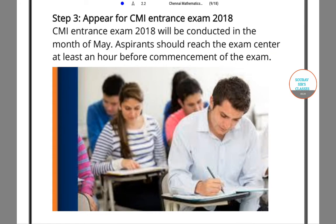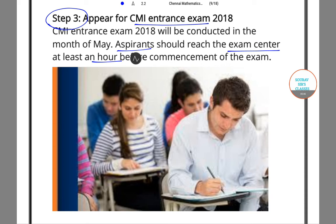The first step is to apply, then to get the admit card. Step 3 is: once you get hold of the admit card, you appear for the entrance exam. The aspirant should reach the exam center one hour before. You need to reach early because if there will be any changes, you can adjust accordingly. Things like delays from trains, buses, or traffic can happen, so you have to take time into your hands.